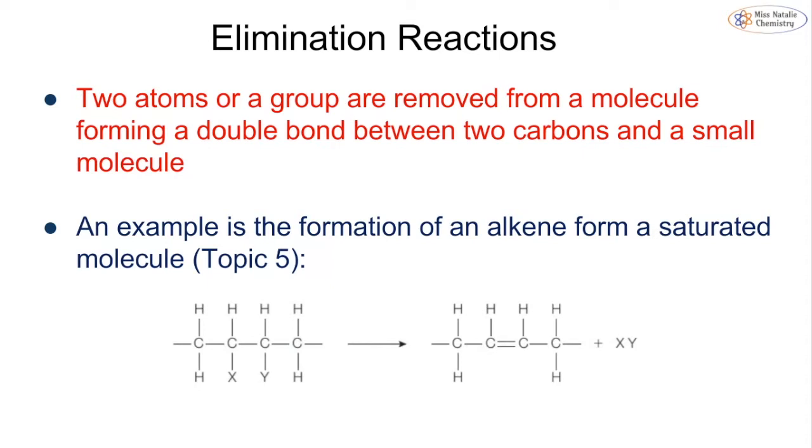The second type of reaction is an elimination reaction. This is where we have at least two atoms or a group of atoms being removed from a molecule, forming a double bond between carbons as well as a small molecule. This time we're going from one reactant to two products. We remove X and Y and form the small molecule XY and make this double bond, making an alkene. You'll have seen the formation of an alkene from a saturated molecule back in topic 5.